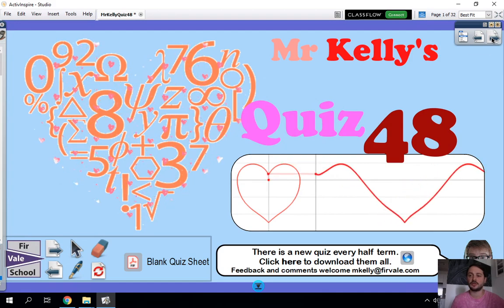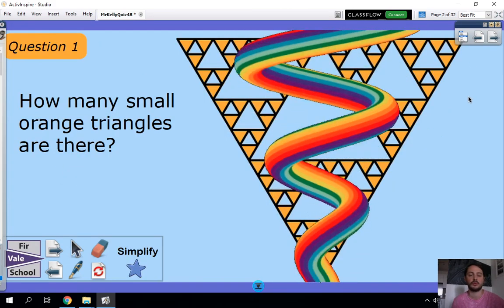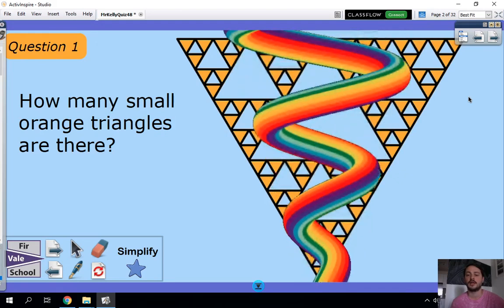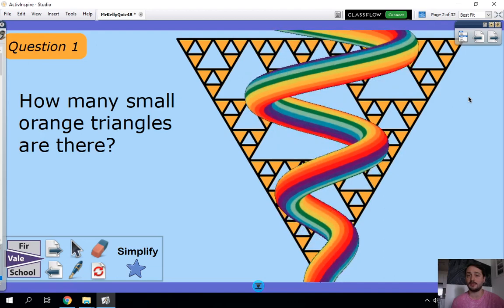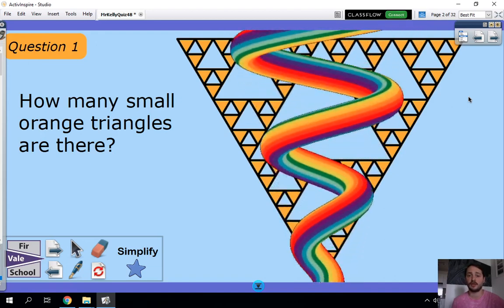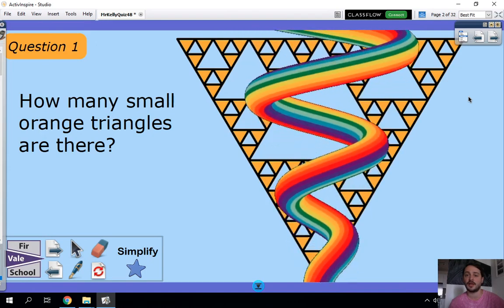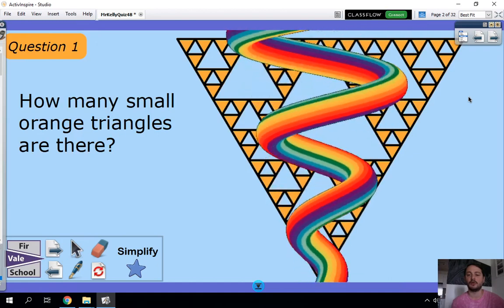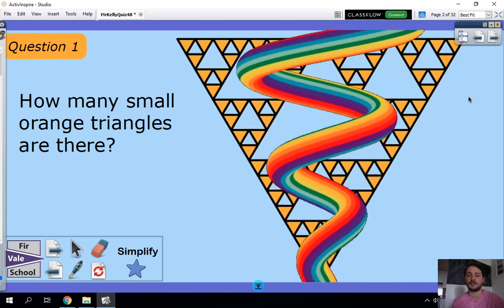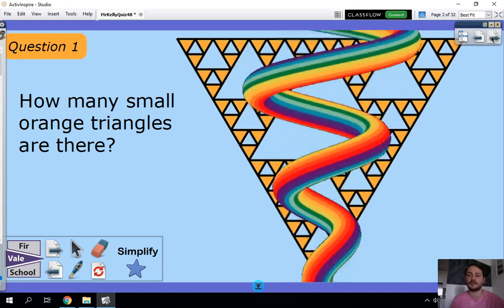Okay so without further ado the first question is to try and tell me how many small orange triangles there are in this picture. Now if you need to you can pause the video at any point, I'm going to be going quite quickly through these so you will need to pause at certain points to be able to work out the answer and write your answers down. So how many small orange triangles are there? I wonder if there's a quicker way rather than counting them one by one.